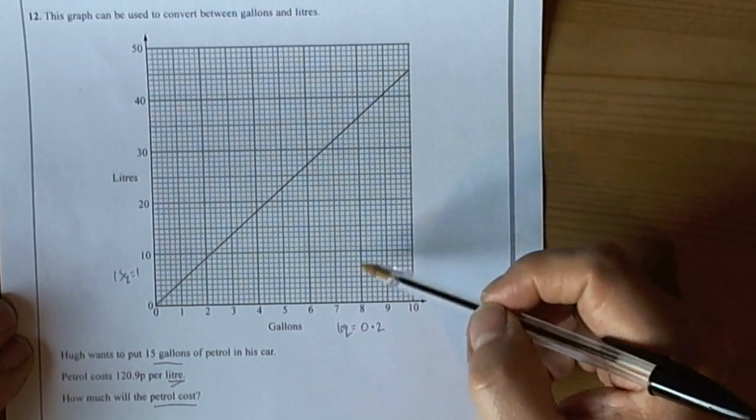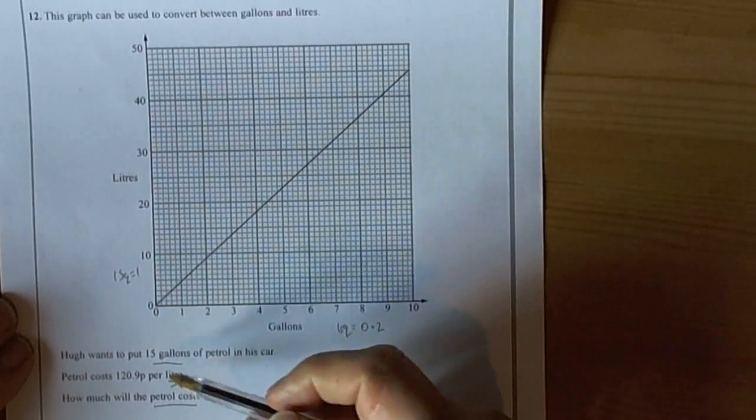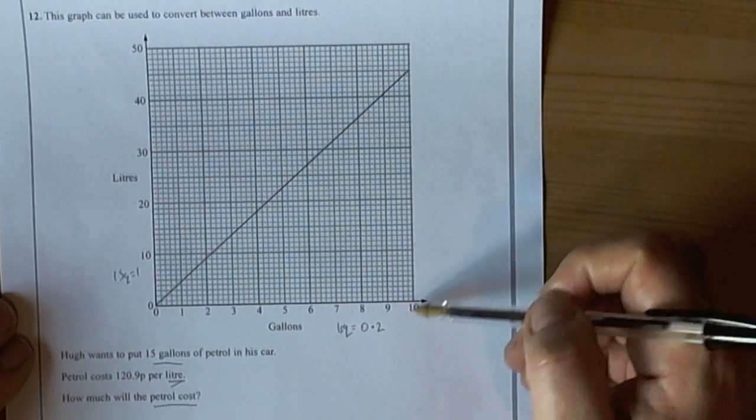So if we look at here on this conversion graph, we can see that it doesn't have 15 gallons, so we've got to look at some way of making up the 15 gallons from the known information.